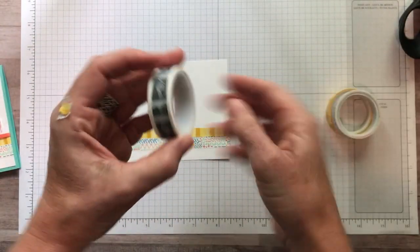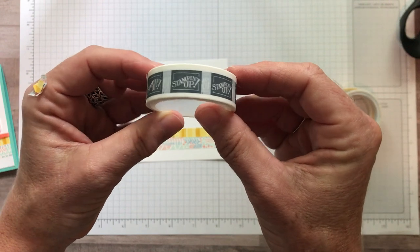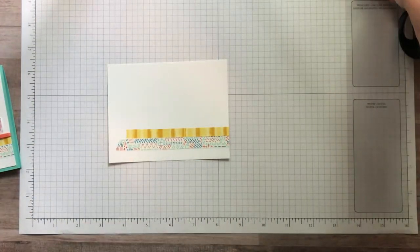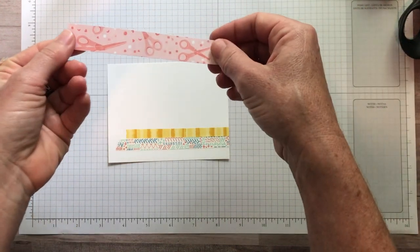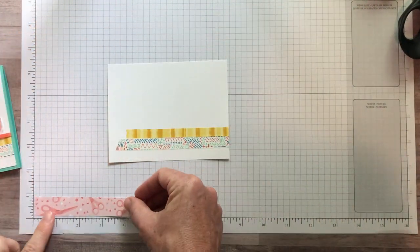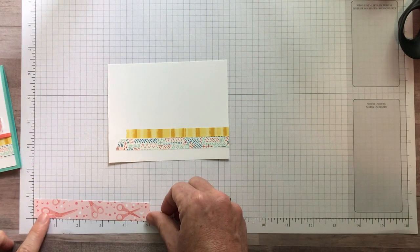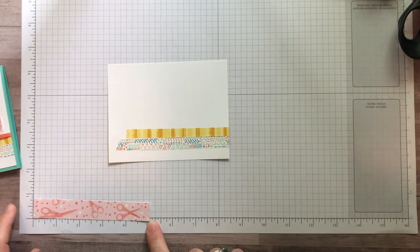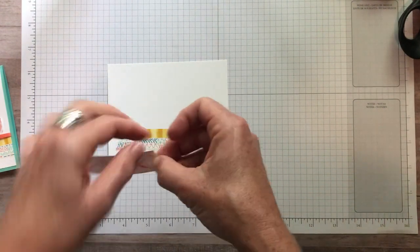And this super cute, can you see the cute little Stampin' Up logo washi tape also? We're going to have to find some fun project for that washi tape. Now this little piece of Designer Series Paper is part of that Follow Your Art Designer Series Paper. It measures three inches by three quarters of an inch by five inch piece of Designer Series Paper.